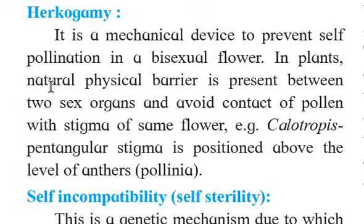The next device is called herkogamy. In herkogamy, the flower is bisexual, but even so, the pollen grain of that particular flower is unable to get deposited on the stigma of the same flower. The reason is that there is a type of physical barrier — a partition — between the anther and stigma. Due to this natural physical barrier, the flower's own pollen grain is unable to get deposited on the stigma of the same flower.